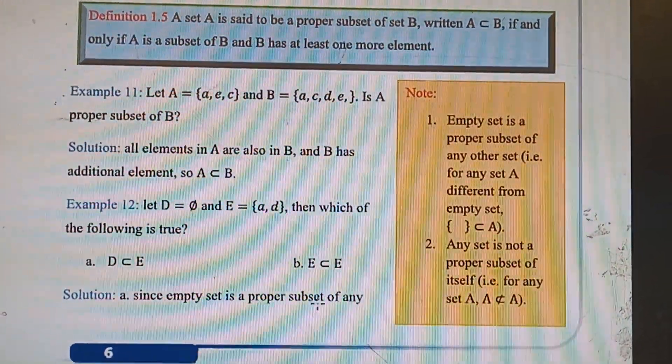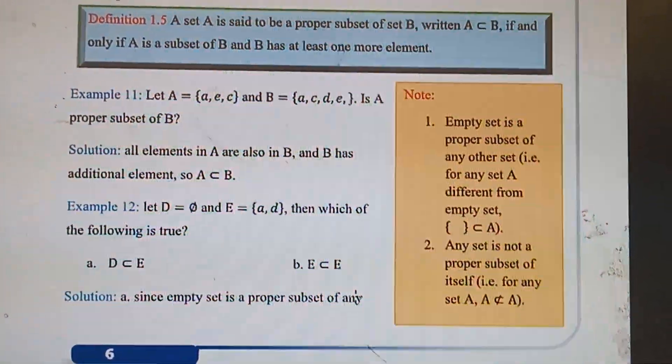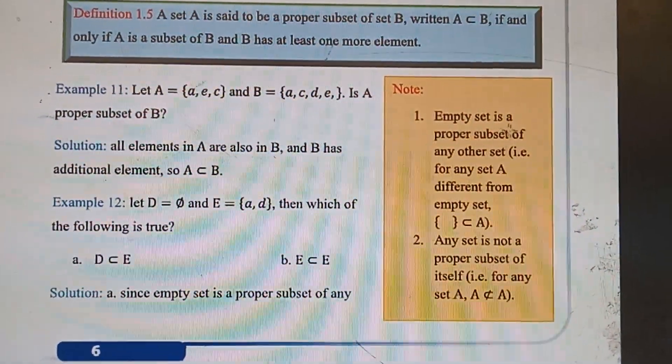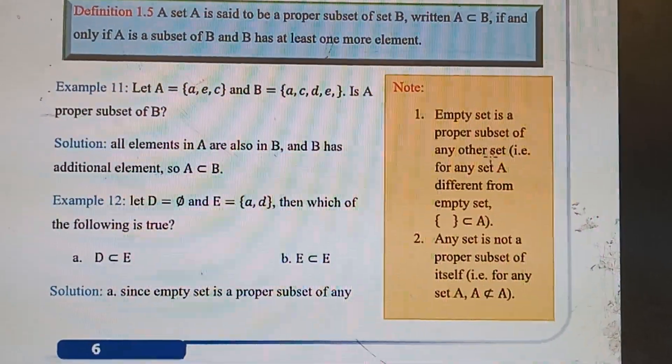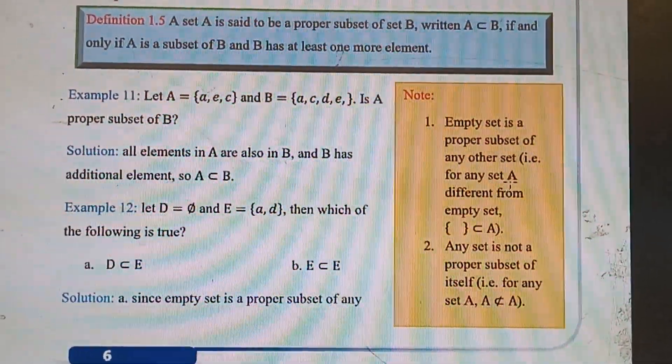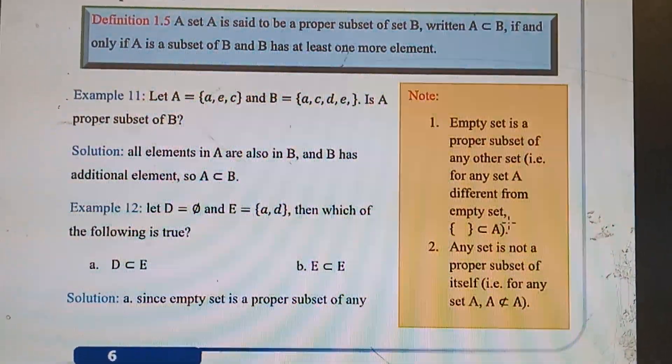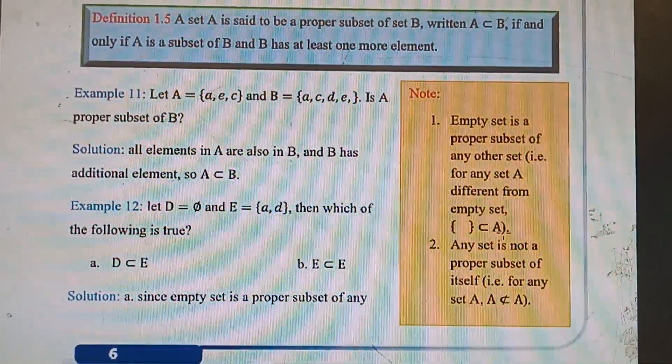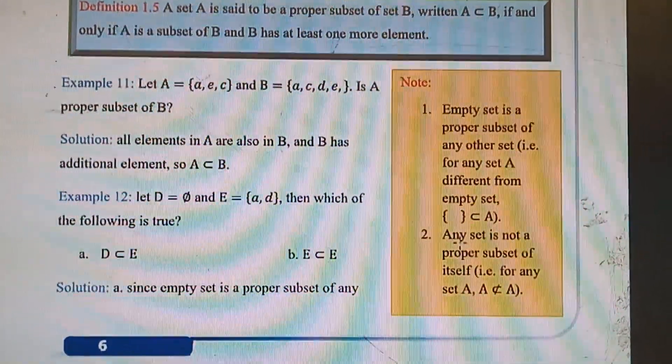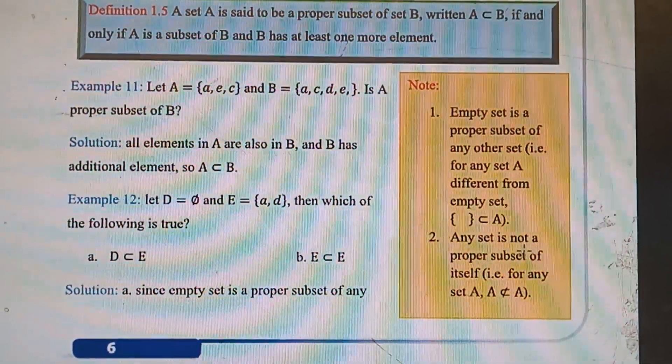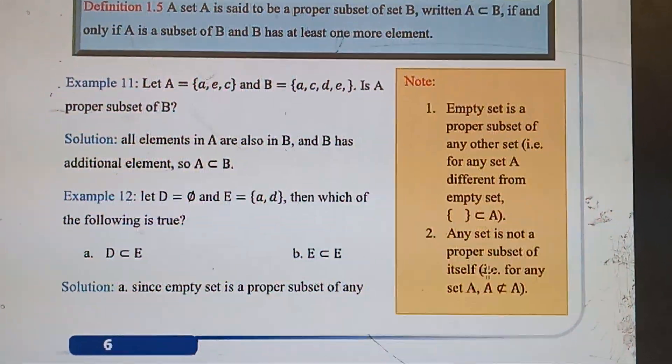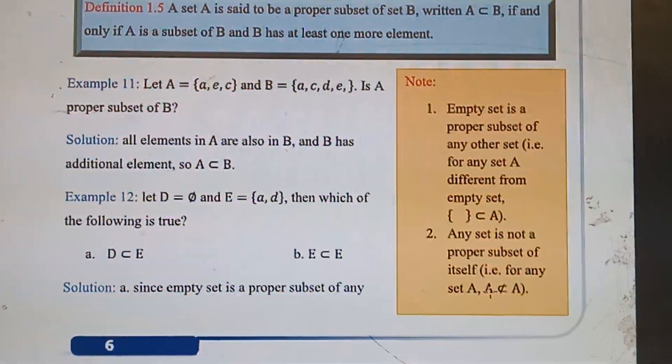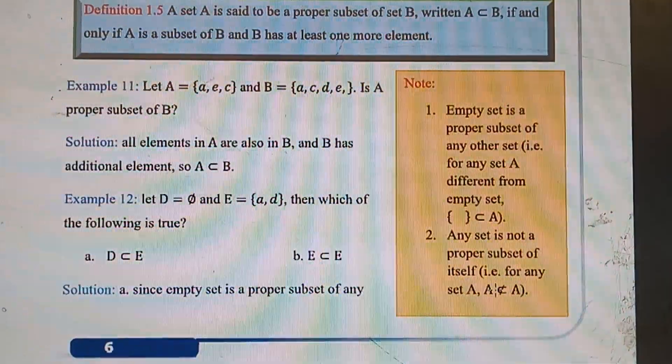Since empty set is a proper subset of any set - note, you should understand here that empty set is a proper subset of any set A different from empty set. The second note: any set is not a proper subset of itself. That means any set cannot be a proper subset of itself.